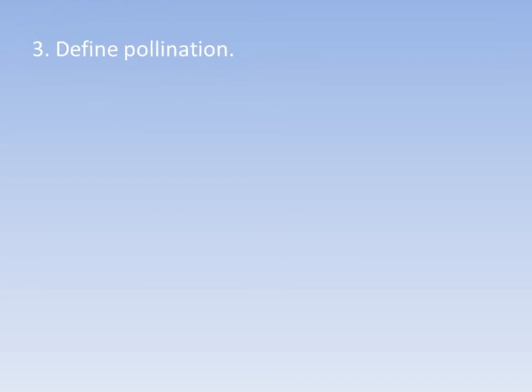Define pollination. The transfer of pollen grains from the anther of the flower to the stigma of a carpel is called pollination. Name a few pollinators: wind, insects, water, birds, and many others — you can find them in your book. Write a minimum of four pollinators.